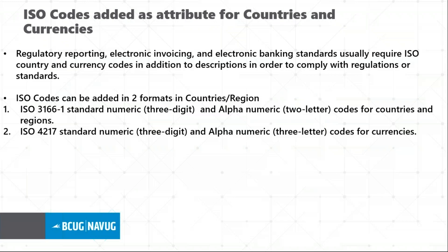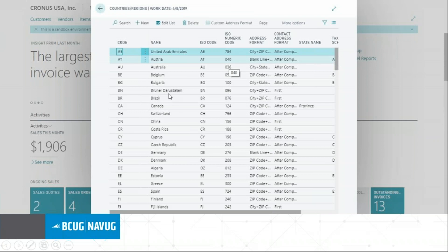One more interesting feature is ISO code attributes for countries and currencies. We have two formats: first, ISO 3166 standard — numeric three-digit and alphanumeric two-digit codes for country and region; second, ISO 4217 standard — numeric three-digit and alphanumeric three-letter codes for currencies. In the current countries and currencies setup, you can now see the ISO code and the ISO numeric code, and similarly in regions as well.